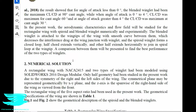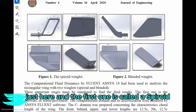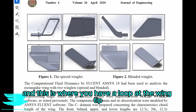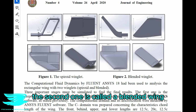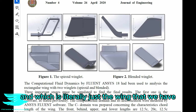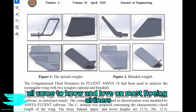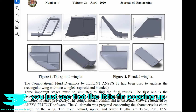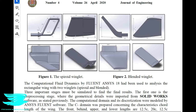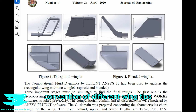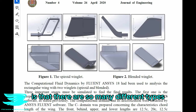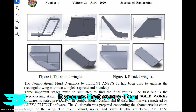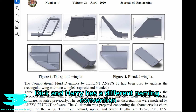The first one is called a Spiroid, and this is where you have a loop at the wingtip. The second one is called a Blended Wing, which is literally just the winglet that we have all come to know and love on most Boeing airliners — at the end, you just see that little fin popping up. The thing about the naming convention of different wingtips is that there are so many different types, and quite frankly, it seems that every Tom, Dick, and Harry has a different naming convention.